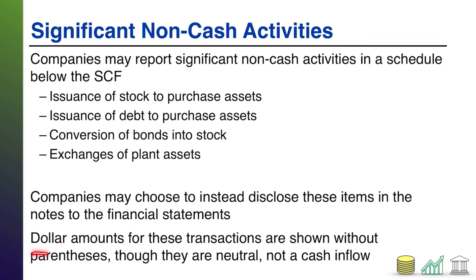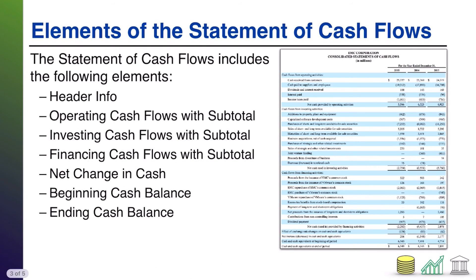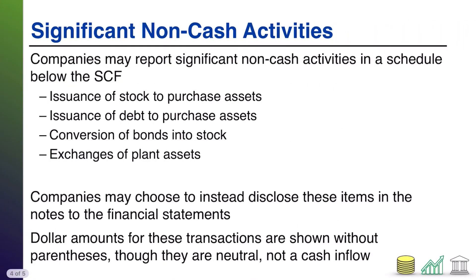Dollar amounts for these non-cash transactions are typically just shown as positive without parentheses, because they're neutral — they're not cash flows. When we look at a statement of cash flows, you will see a combination of dollar amounts without parentheses and dollar amounts with parentheses. All that's really saying is cash in — the ones without parentheses or a positive number — and cash out — the ones with parentheses or a negative number. So when it comes to significant non-cash activities, because no cash was involved, you just list a neutral number reflecting the value of that transaction, with no assumption that cash was in or out.